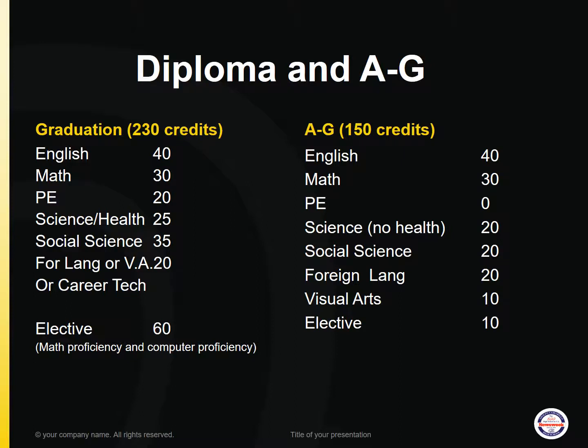This slide references the different requirements needed for high school graduation and A through G requirements. The first column reviews the graduation requirements. 230 credits are required in the following areas: 40 credits for English, 30 credits for math, 20 credits for PE, 25 credits for science and health, 35 credits for social science, 20 credits for world language or visual performing arts or career technical, and 60 credits for electives.